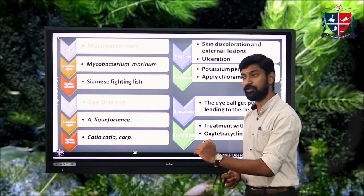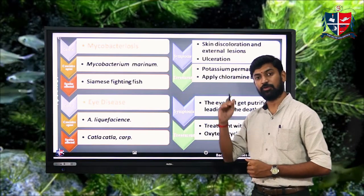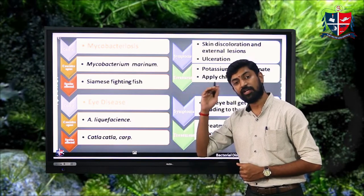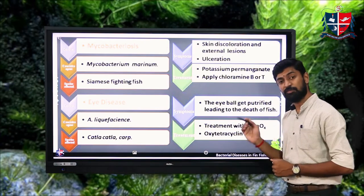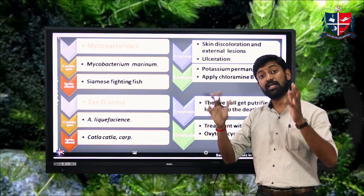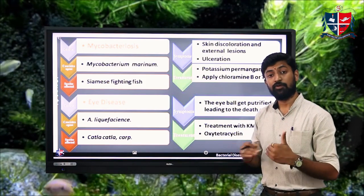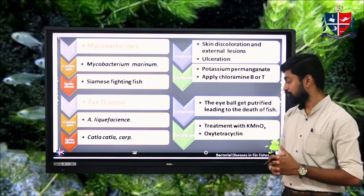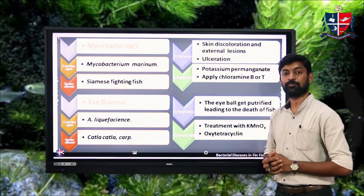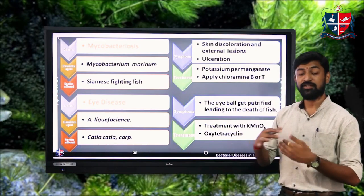Eye disease in fishes is mainly caused by the proliferation of Aeromonas liquefaciens bacteria, affecting Katla katla and other carp species. The major symptom is putrefaction of the eyeball, which leads to the death of the fish. Treatment involves bath treatment with potassium permanganate and oxytetracycline added through the feed, along with maintaining good water quality.